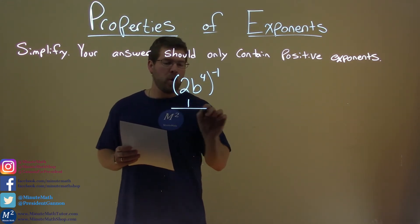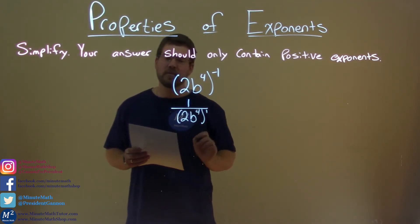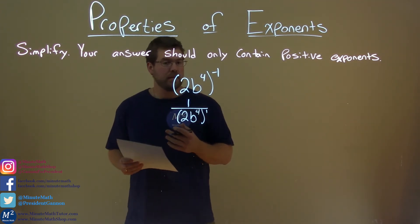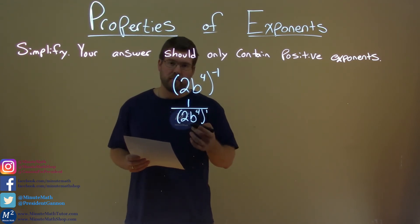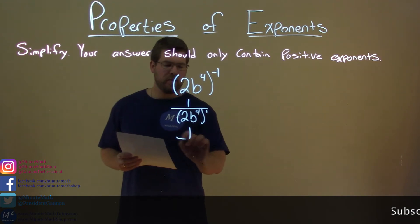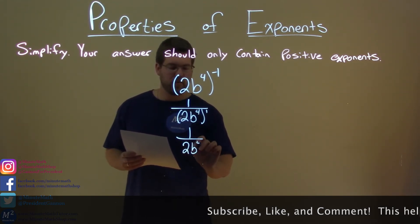We take 1 over 2b to the fourth power to the positive one power from our rules with exponents. And then now, we don't really need to write anything to the positive one power. So we can rewrite this without the parentheses, and we have 1 over 2b to the fourth power.